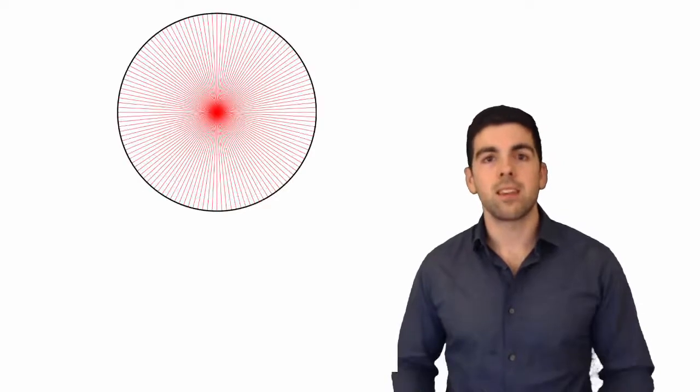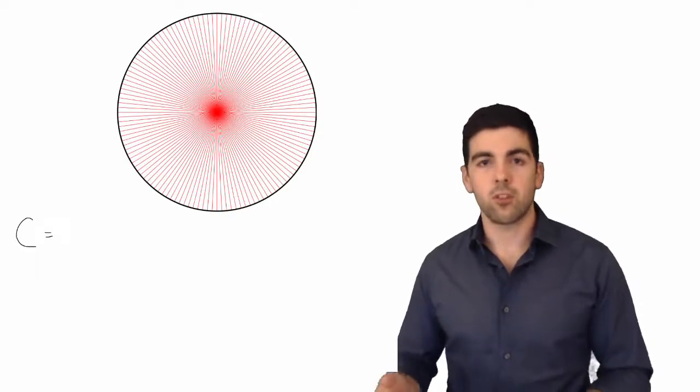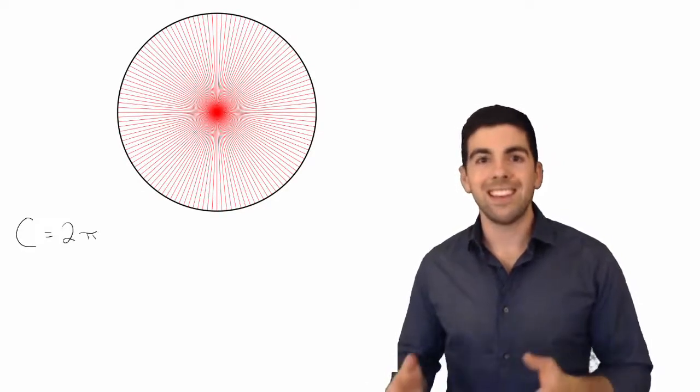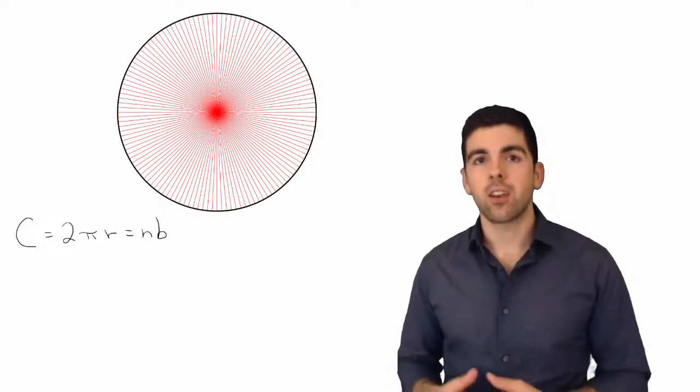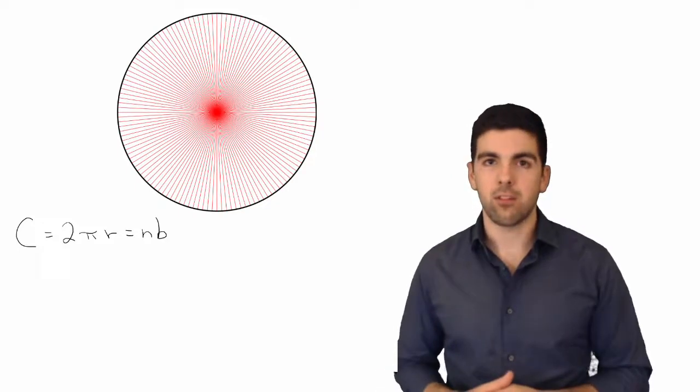And so what we can say is that the circumference of a circle, which is equal to 2πr, is equal to N, which is the number of triangles, times the base of each triangle.